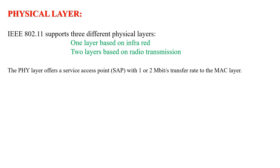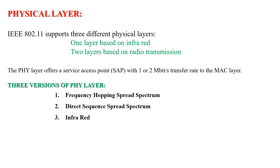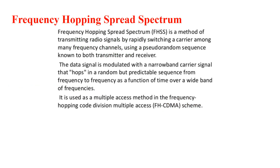IEEE 802.11 supports three different physical layers. One layer is based on infrared technology and the remaining two layers are based on radio transmission. The physical layer offers access at one or two megabits per second transfer rate. The two versions of the physical layer are frequency hopping spread spectrum and direct sequence spread spectrum, both utilized by radio transmission, plus infrared.